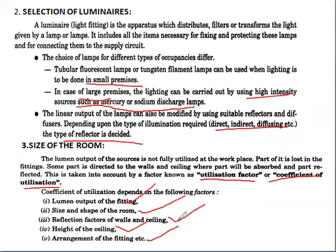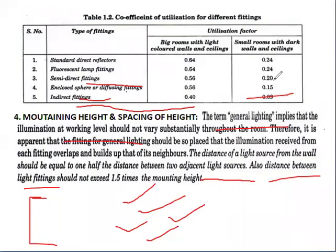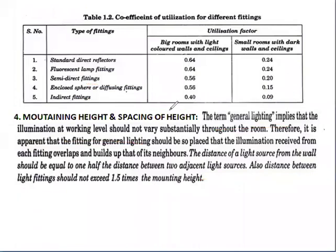To design a lighting scheme and to find out the coefficient of utilization, these five factors are very much required: lumen output of the fitting, size and shape of the room, reflection factors of walls and ceiling, height of the ceiling, and arrangement of the fittings. General coefficients of utilization for different fittings for standard rooms with light-colored walls and ceilings are referred to in the relevant table.